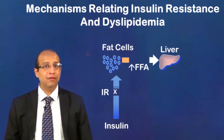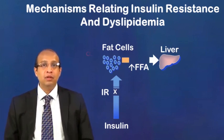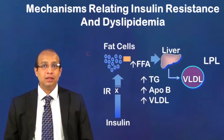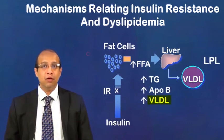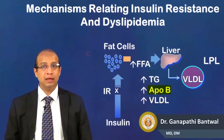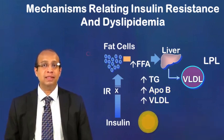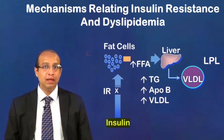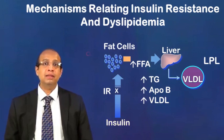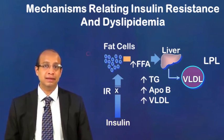There is an increased free fatty acid flux to the liver. Because of this increased free fatty acid flux, you have an increased VLDL formation which consists of increased triglycerides and ApoB. You also have a decreased lipoprotein lipase, because this is activated by insulin, and hence triglyceride metabolism does not happen when you have insulin resistance.